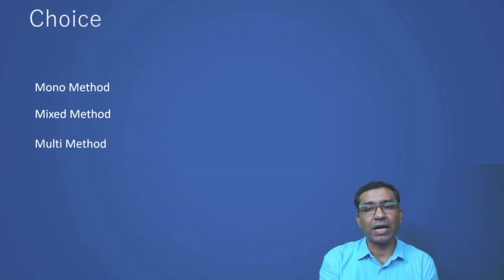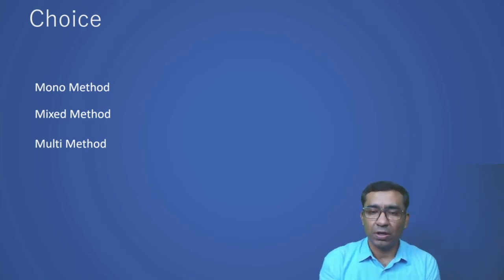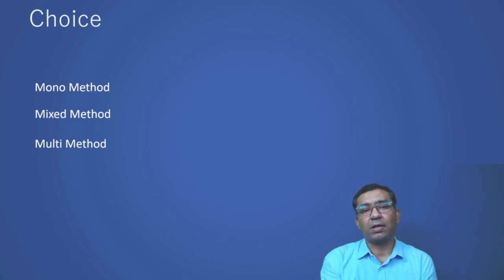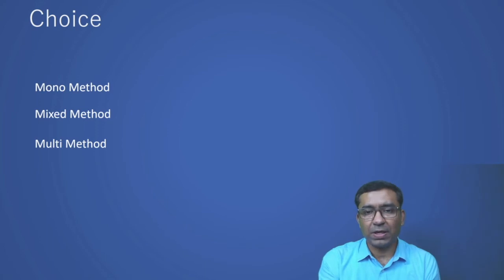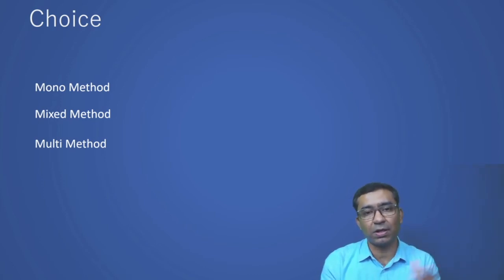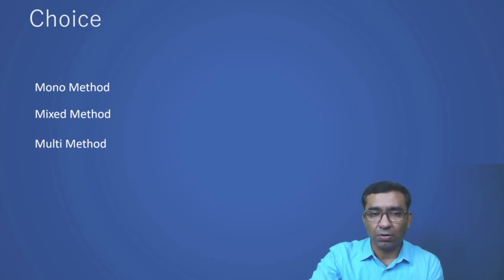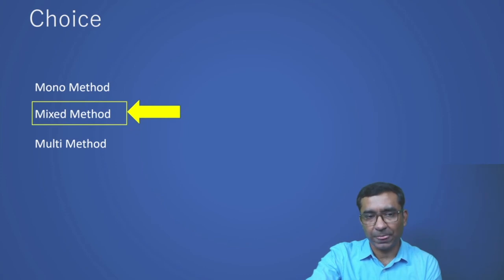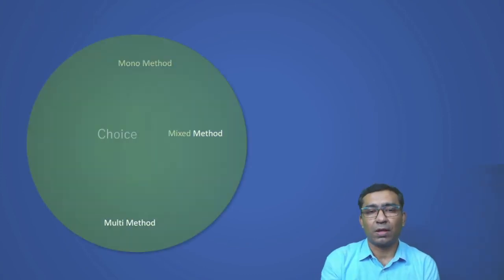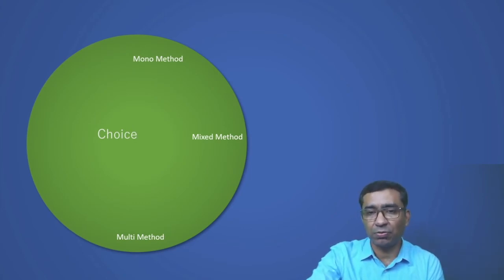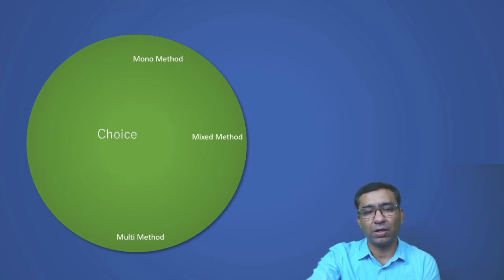The next layer — the fourth — is more on what type of research methods you are going to use. You can use either one method: qualitative or quantitative. You can use mixed method, meaning qualitative and quantitative, sequential or parallel. In some cases, you use multi-method — not only qualitative or quantitative, but simultaneously different processes: qualitative, then quantitative, then quantitative, then qualitative. It means you are using different types of research at different stages of your research process. That is called multi-method research. So you have to identify whether you are doing mono method, multi-method, or mixed method.